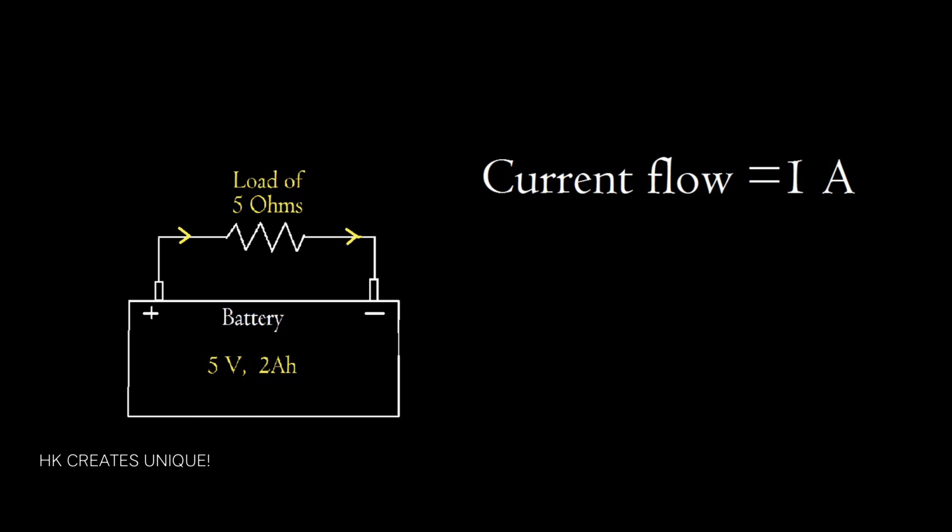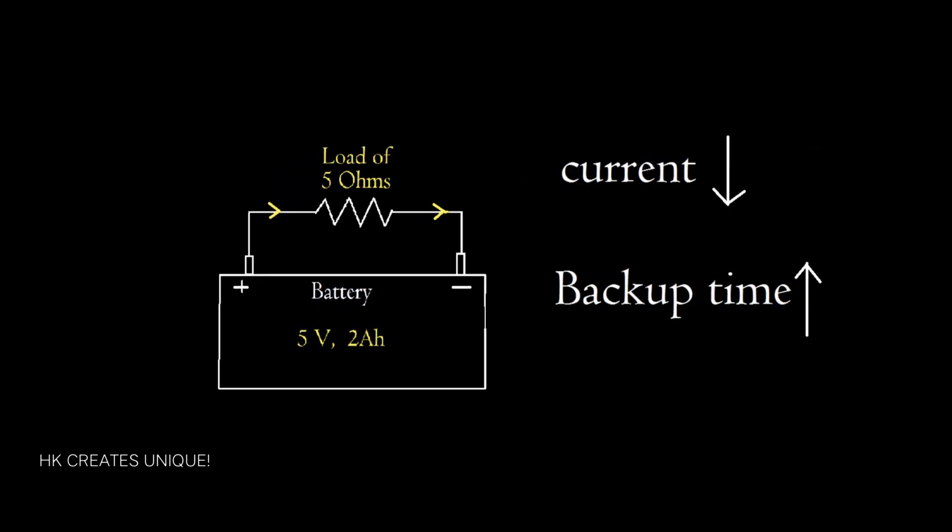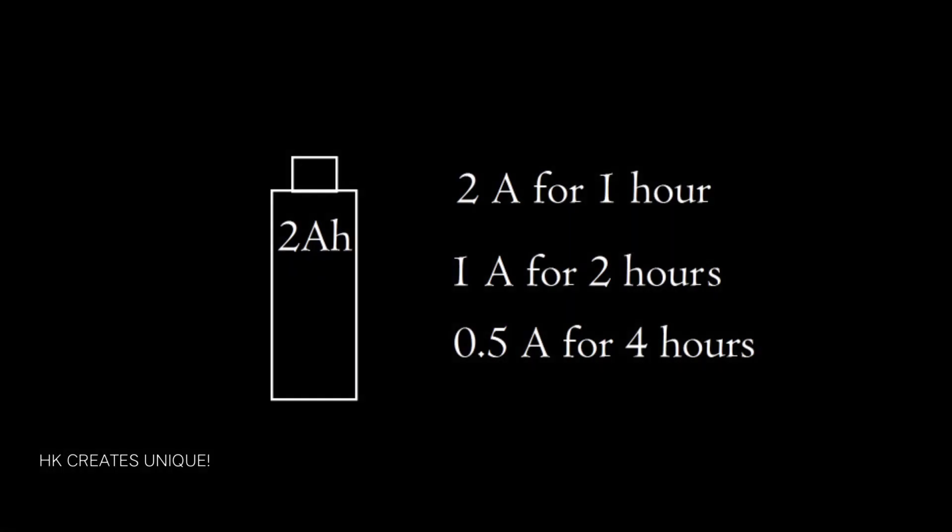This time, since current is 1A, the battery lasts 2 hours. This seems logical. When current flow is less, the battery can supply power longer. Therefore, a 2Ah battery can supply 2A for 1 hour, 1A for 2 hours, and 0.5A for 4 hours.